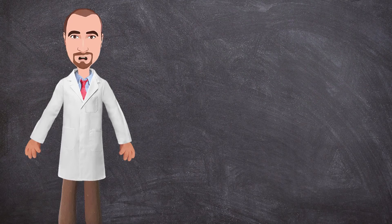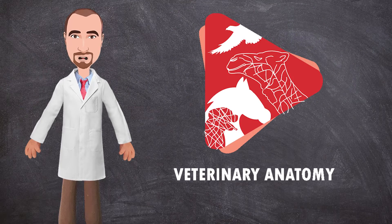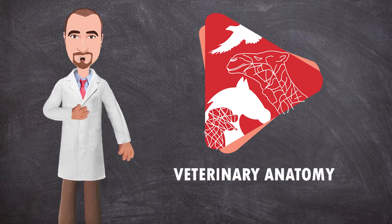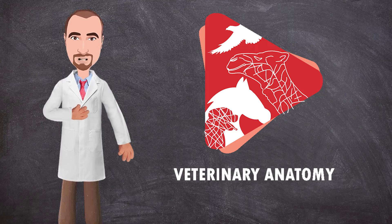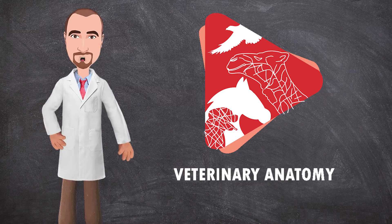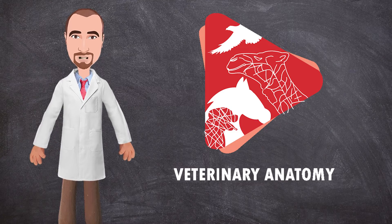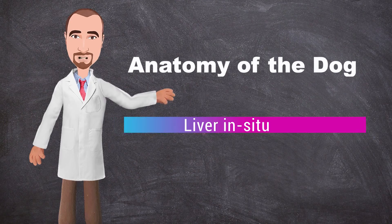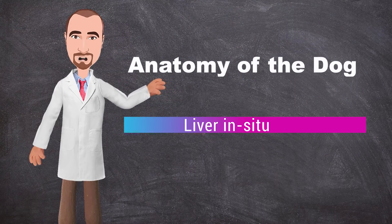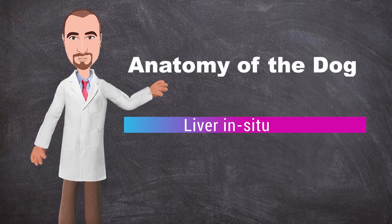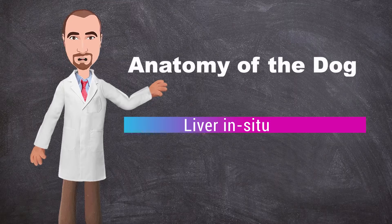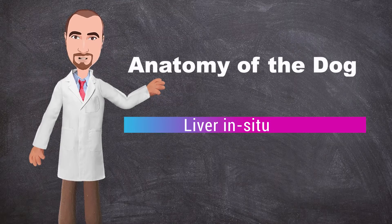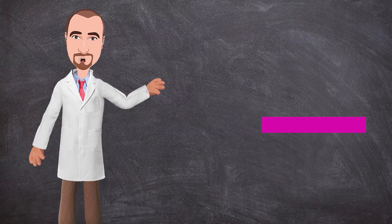Hello everyone and welcome back to another anatomy video. This is Dr. Ayan from the Veterinary Anatomy channel. In this video we will talk about the anatomy of the liver in situ inside the abdominal cavity in the dog, and we will talk about the ligaments and the different divisions of the liver. So let's get started.